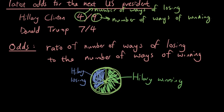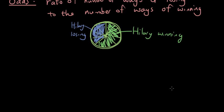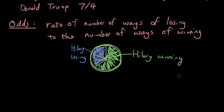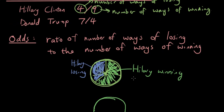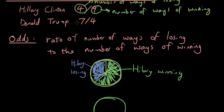So we can draw a similar pie graph for Donald Trump. So let's draw a circle to represent all the possibilities of the sample space, whether Donald Trump will win the election or not. There are seven slices that represent him losing, and four slices to represent him winning. So in total there will be 11 slices.